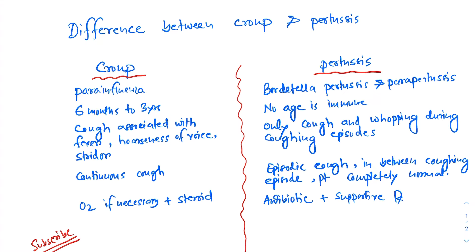Hello everybody, today I am going to talk about the difference between croup and pertussis. Croup is a viral illness mainly caused by the para-influenza virus. On the other hand, pertussis is a bacterial illness caused by Bordetella pertussis and Bordetella parapertussis.